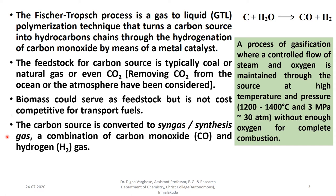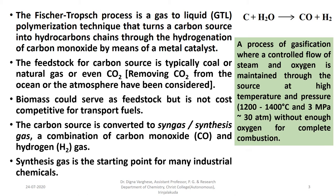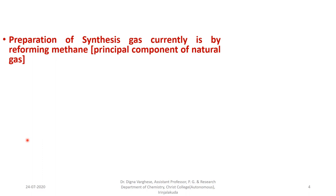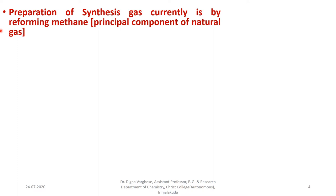The carbon source is converted to synthetic gas, or synthesis gas, i.e. a combination of carbon monoxide and hydrogen. Synthesis gas is the starting point for many industrial chemicals. Currently, synthesis gas is prepared by reforming methane, which is the principal component of natural gas. Methane is treated with water, giving hydrogen and carbon monoxide, i.e. syn-gas or synthesis gas.